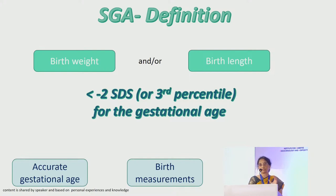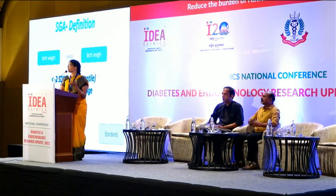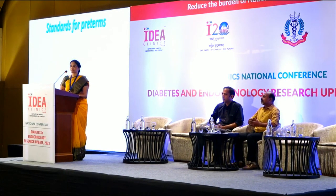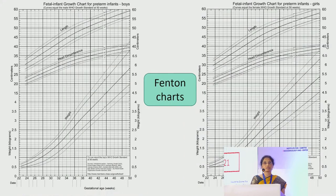Accurate birth measurements are needed, but unfortunately most discharge summaries — even from reputed hospitals — don't mention the crown-rump length or birth length of the child. Standards differ by population; for example, growth charts referenced to the AP or Telangana population should be used. Standards for pre-terms are different, and charts like Fenton charts and Intergrowth charts are used for diagnosing SGA in preterm infants.